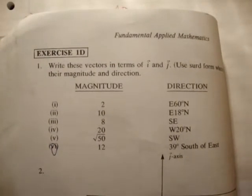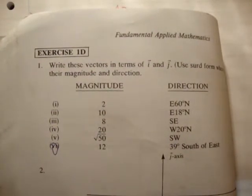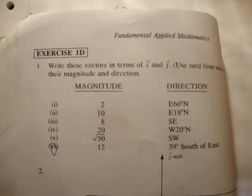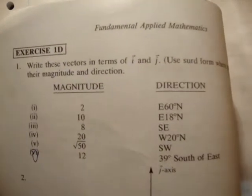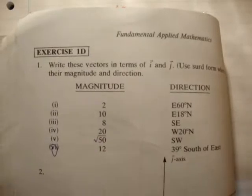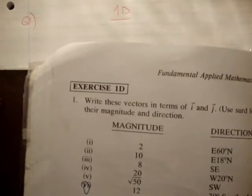There's the first question. It says, write these vectors in terms of i-hat and j-hat, use surd form where possible, given their magnitude and direction. Let's do some of these. You don't need to do all of them. Because once you understand the basics of it, well then the rest doesn't change.